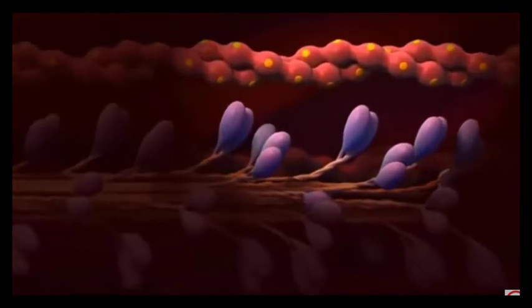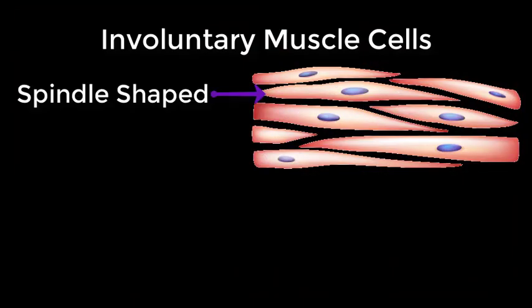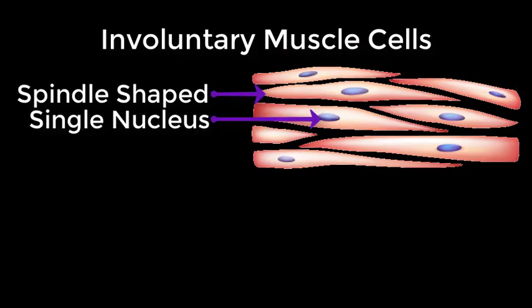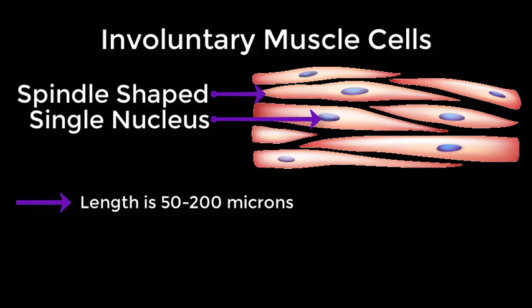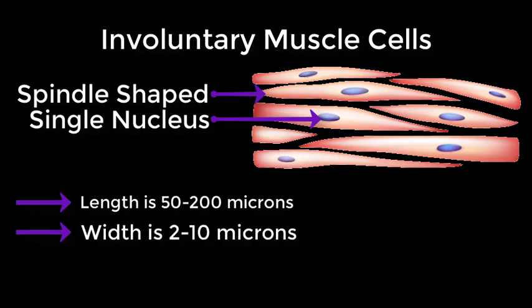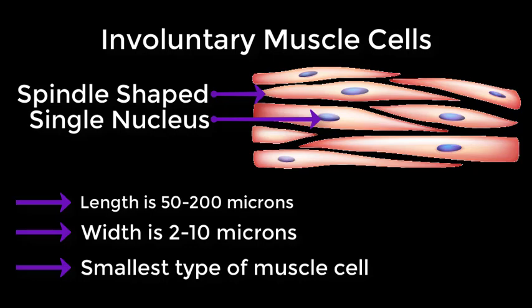The involuntary smooth muscle cells are spindle-shaped, consist of one nucleus, and are arranged in sheets — an organization that means they can contract simultaneously. The length is between 50 and 200 microns whereas the width is 2 to 10 microns, making them the smallest type of muscle cell. They are elastic and therefore important in the expansion of organs such as the kidneys, lungs, and vagina. The myofibrils of smooth muscle cells are not aligned like in cardiac and skeletal muscle, meaning they are not striated — hence the name smooth.